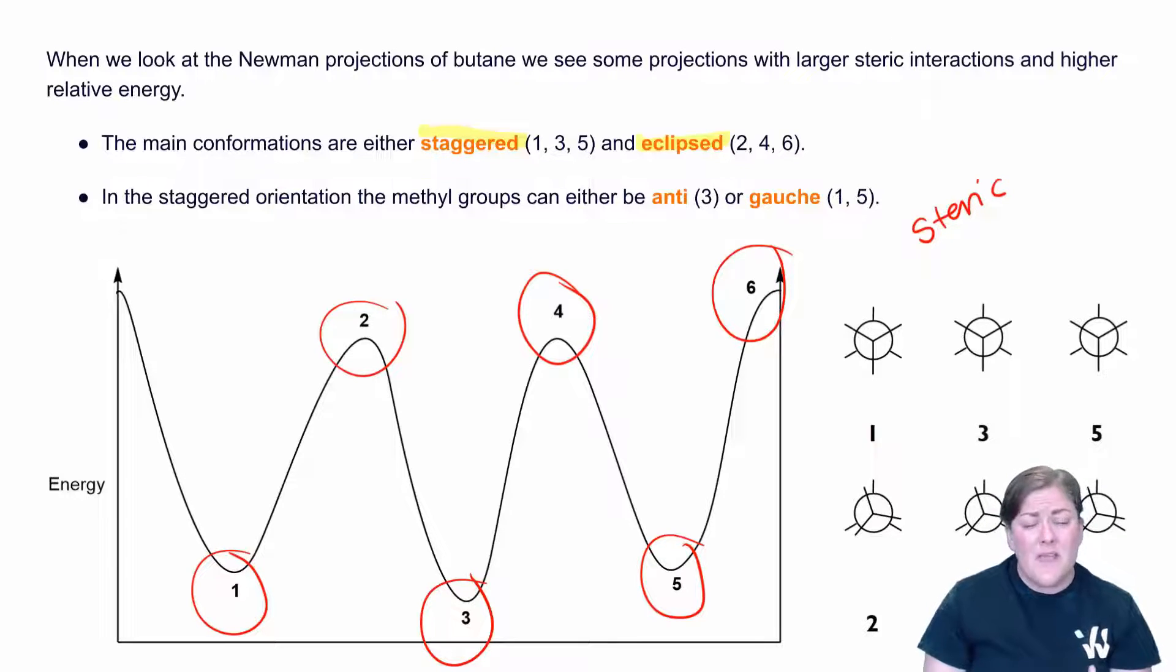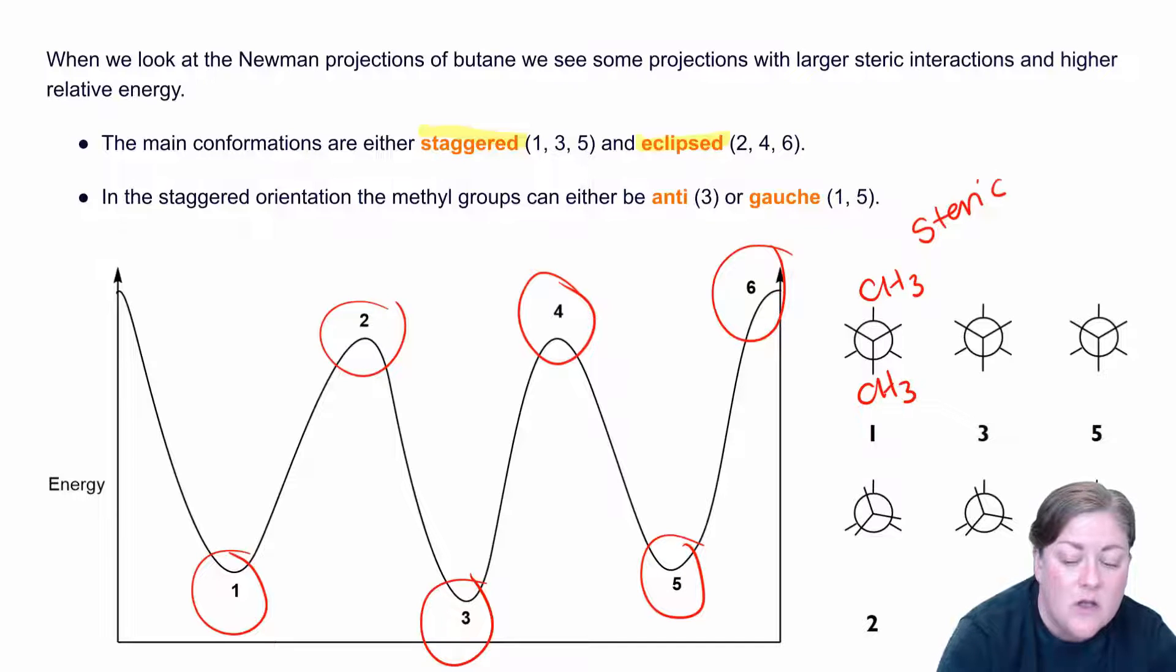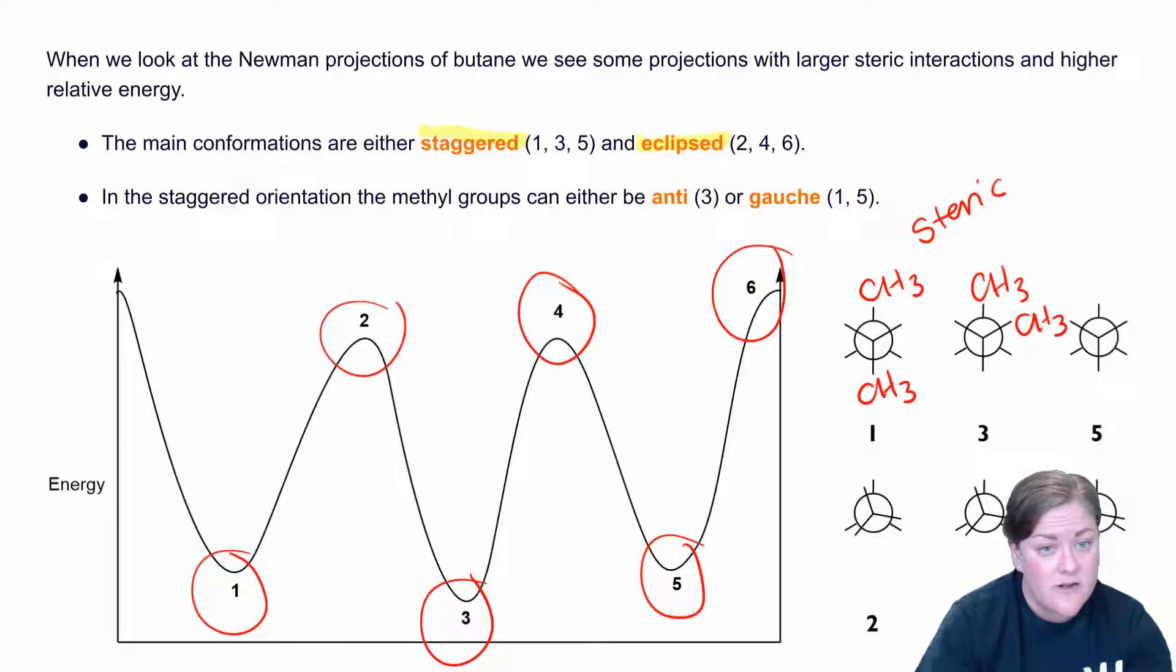Now it's worth noting that when we have big groups, for example two methyl groups, I can have them 180 degrees apart like so, or I can have them 60 degrees apart like so. When I have them 180 degrees apart, this is called the anti-configuration. Now anti is when they are as far apart as they can possibly be, and this will be the absolute lowest energy.